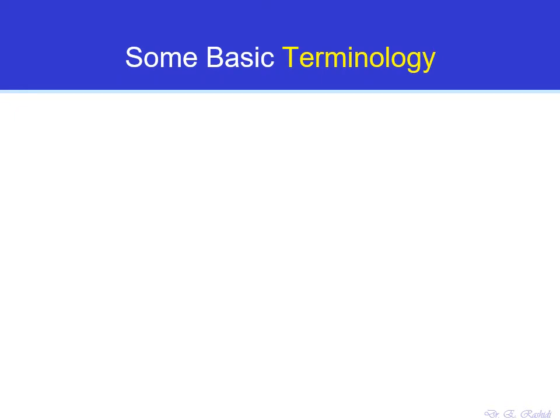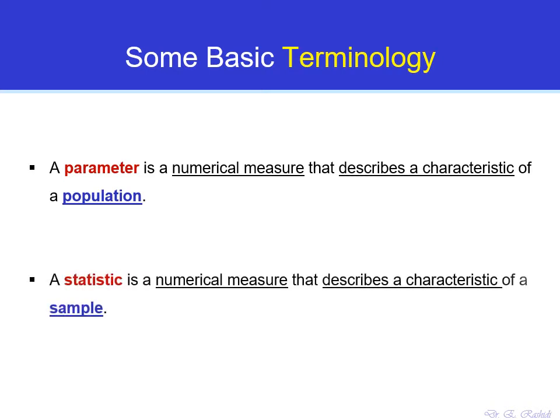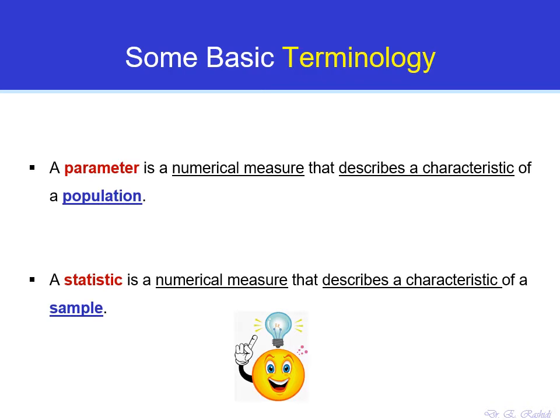We use certain numerical measures to describe characteristics of a group we want to study. You are already familiar with one of those measures: the average. When we study a population, those measures used to describe the characteristics of the population are called parameters. When we study a sample, those measures are called statistics. And that is actually where the word 'statistics' comes from in the subject of statistics.